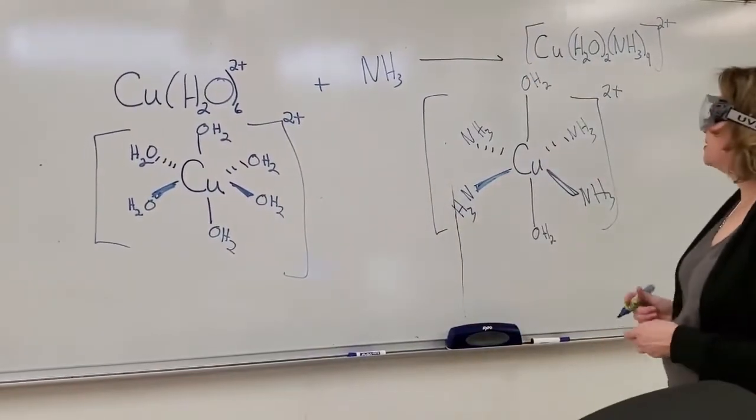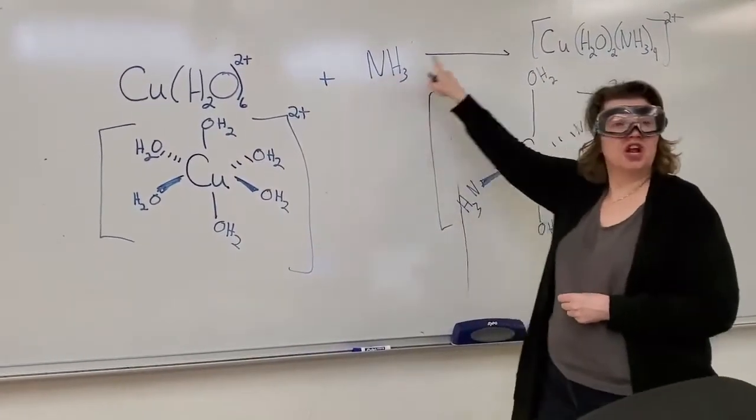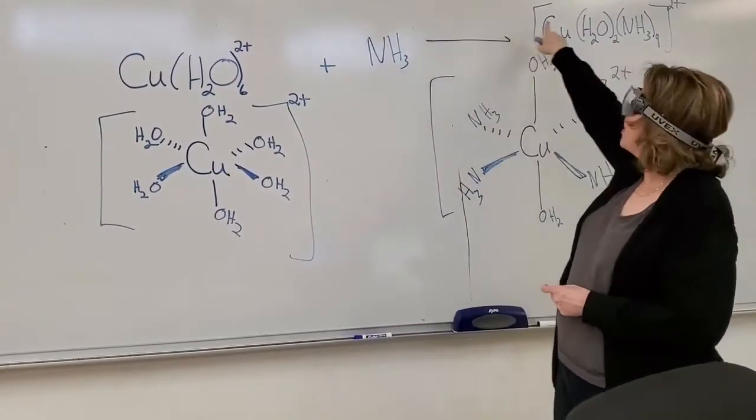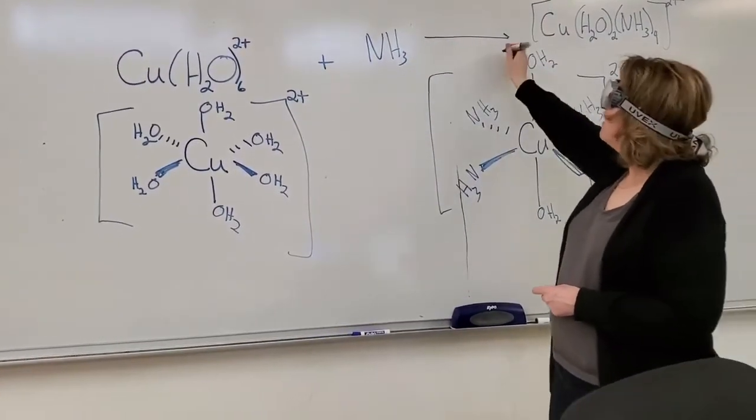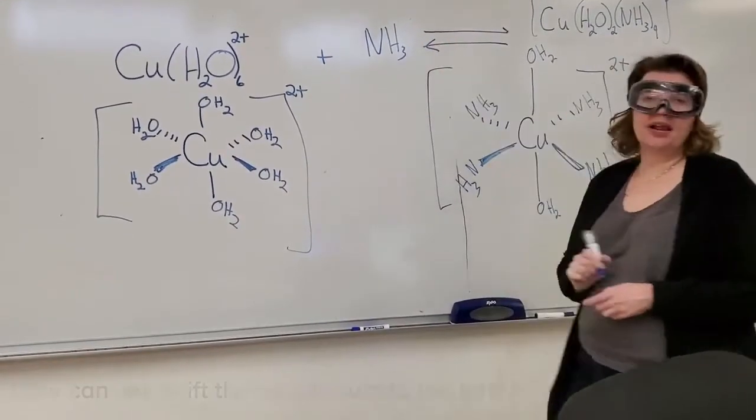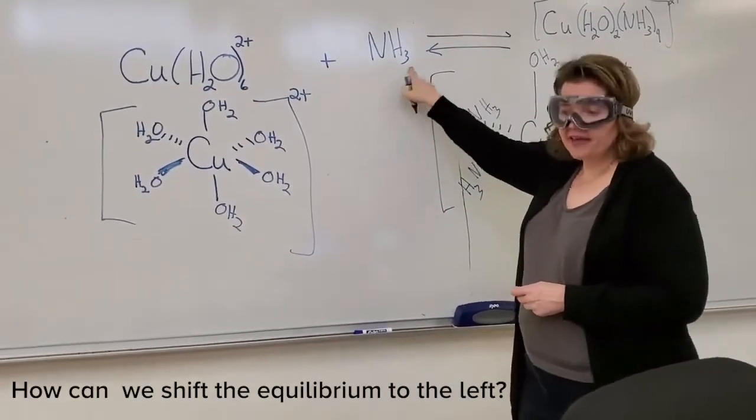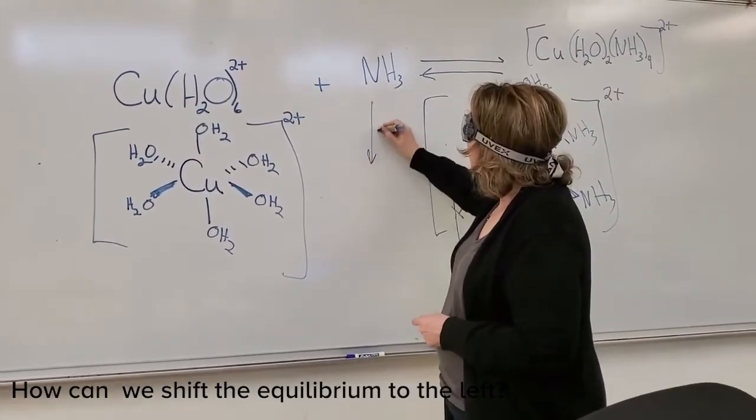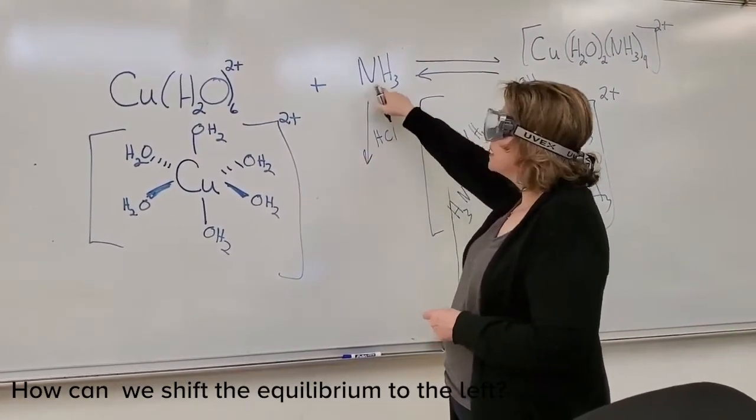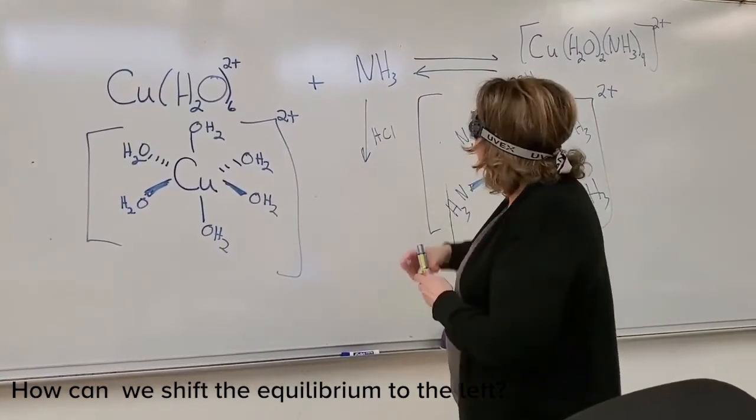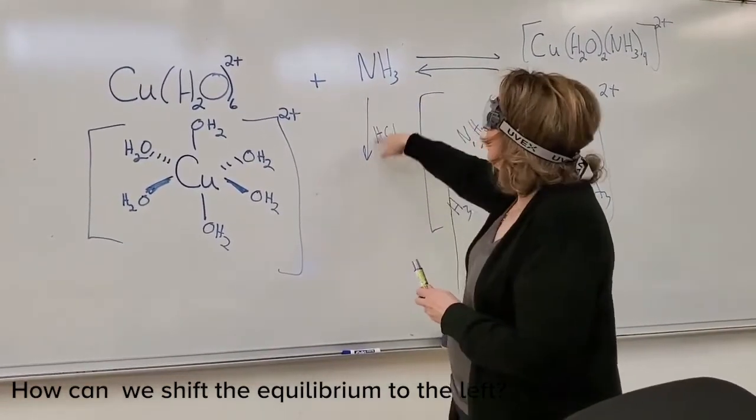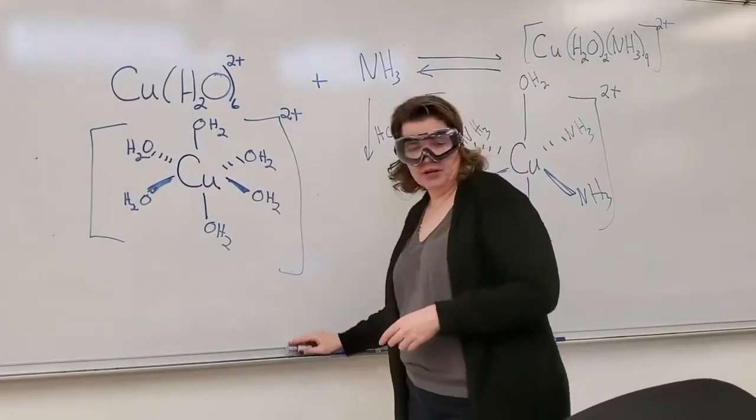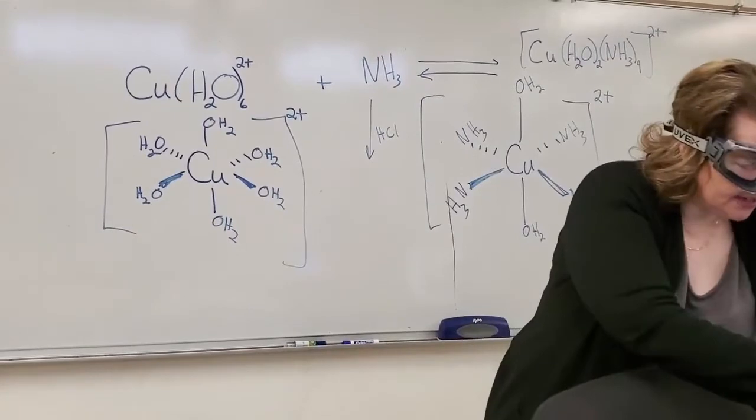So Le Chatelier's principle, I already played with it a little bit to push it all the way to the right. Le Chatelier's principle says if I add extra ammonia, we're going to push the equilibrium to the right. But if I want to bring it back, how can I bring it back? I can bring it back by removing the NH3. The way that I'm going to remove the NH3 is I'm going to add some hydrochloric acid. That's a base and that's an acid. So the acid will remove the NH3, and as the NH3 is removed, we can bring the equilibrium back.